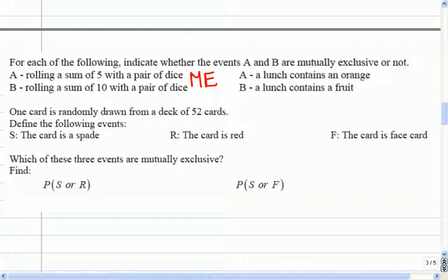Okay, let's just say that your lunch contains an orange and your lunch contains a fruit. Can those happen at the same time? Yeah, so those are not mutually exclusive. They could happen at the same time. So I don't know if those are the best examples, but let's try some stuff like cards.